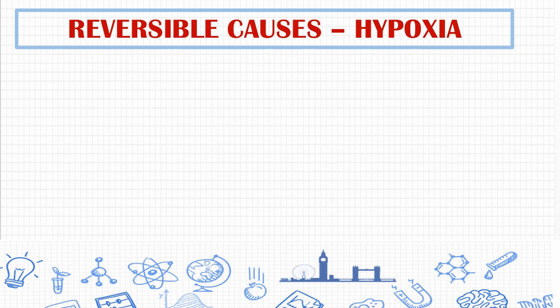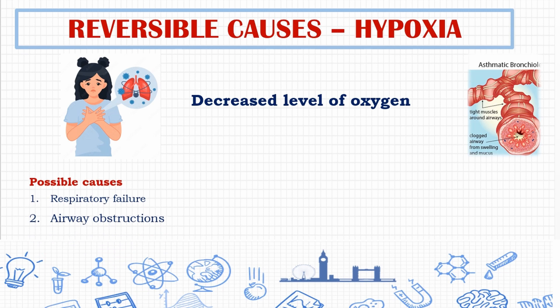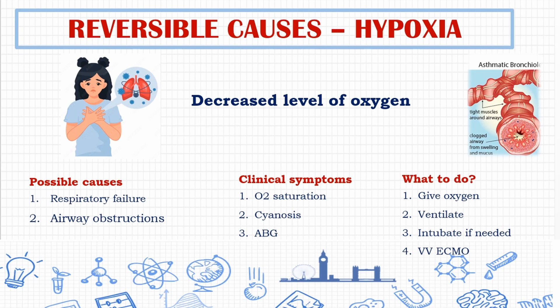If the patient is suspected to have hypovolemia, immediately gain IO or IV access and start fluid resuscitation or blood products. The second reversible cause is hypoxia — a decreased level of oxygen in the tissue. Possible causes include respiratory failure, where the lungs cannot adequately provide oxygen, leading to hypoxemia and eventually hypoxia. Other causes include any kind of airway obstruction. Symptoms are decreased SpO2 and cyanosis. ABG is an important clinical parameter to assess gas levels.